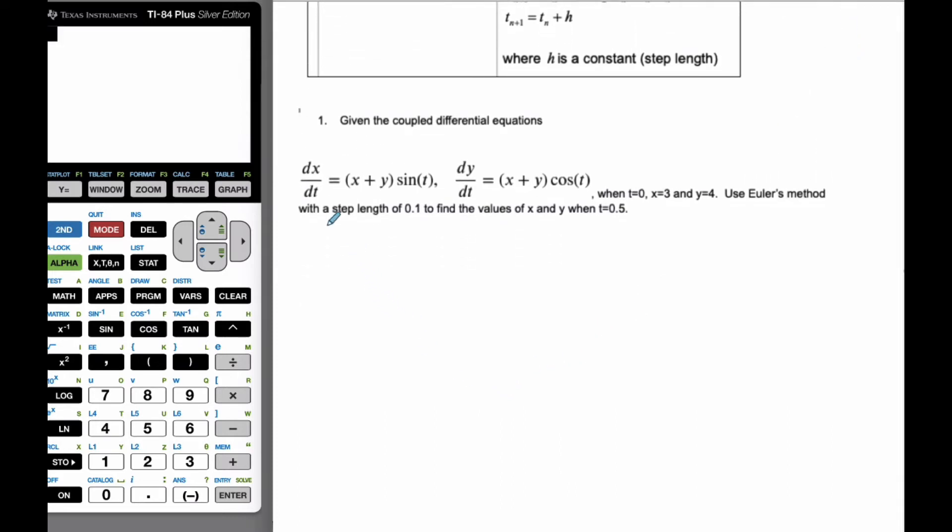So in doing so, I'm going to make my equations. If I want xn, I'm going to have to get xn minus 1 plus h is my step 0.1 times xn minus 1 plus yn minus 1 times the sine of tn minus 1.